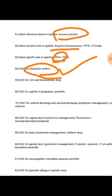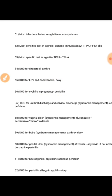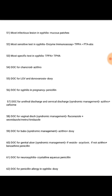Drug of choice for chancroid is azithromycin. Drug of choice for LGV and donovanosis is doxycycline. Drug of choice for syphilis in pregnancy is penicillin. Syndromic management: drug of choice for urethral or cervical discharge is azithromycin plus cefixime; for vaginal discharge it is fluconazole plus secnidazole, metronidazole, or tinidazole.